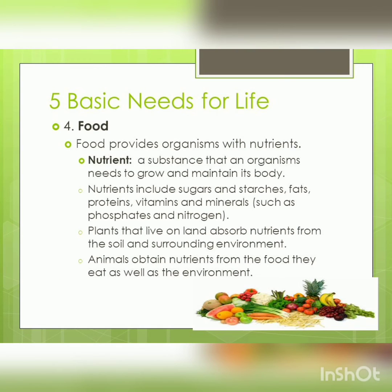Food provides organisms with nutrients. A nutrient is a substance that an organism needs to grow and maintain its body. Nutrients include sugars and starches, fat, protein, vitamins and minerals. Plants that live on land absorb nutrients from the soil and surrounding environment. Animals obtain nutrients from the food they eat as well as the environment.